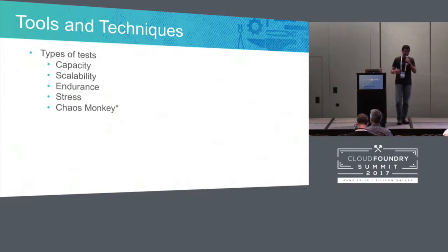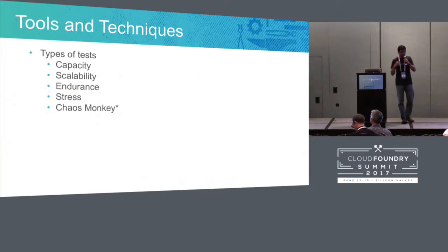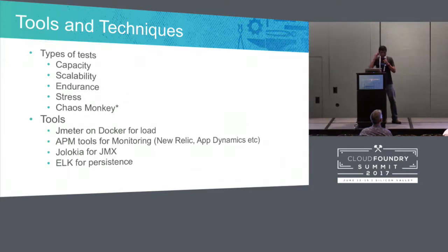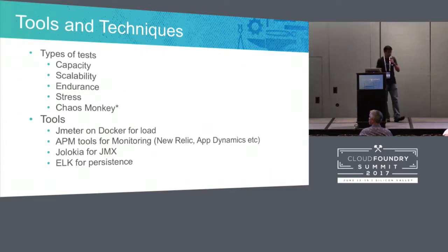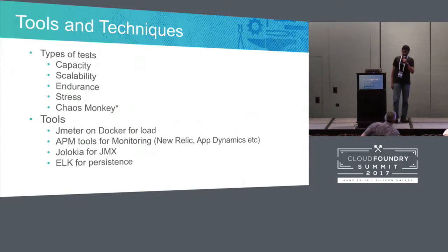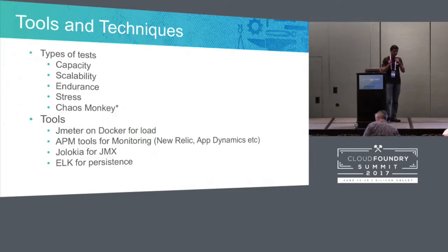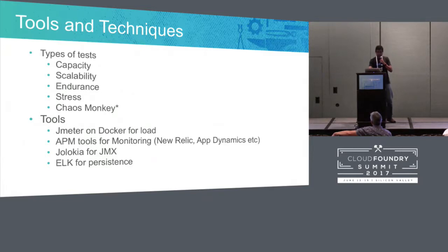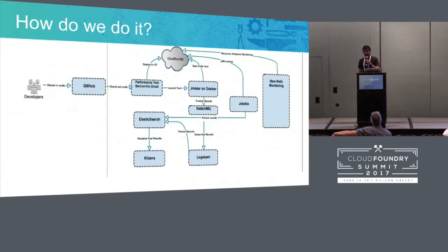Chaos monkey is to randomly bring down instances — we stop and start instances at random times to make sure the system detects failures and recovers gracefully. The tools we use include JMeter for load generation, APM tools like New Relic, AppDynamics, or Dynatrace, Jolokia for JMX — which is slightly different from what people typically use for JMX — and the ELK stack to persist the data that comes back from JMeter.